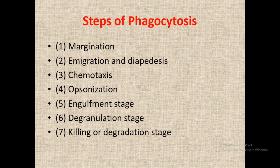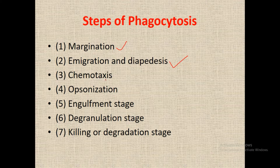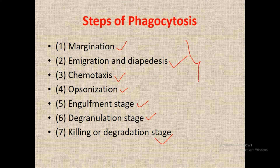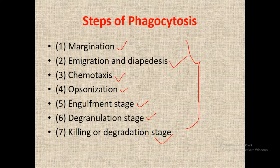Before we go through the different steps of phagocytosis, I want to note that this topic is most important for physiology — for first internal as well as finals. The seven steps are: first, margination; second, immigration and diapedesis; third, chemotaxis; fourth, opsonization; fifth, engulfment; sixth, degranulation; and seventh, killing or degradation.